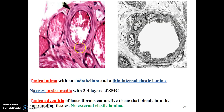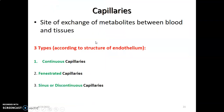This shows an arteriole with a tunica intima having an endothelium of simple squamous cells and a thin internal elastic lamina. There is a narrow tunica media with three to four layers of smooth muscle cells, and adventitia with connective tissue. In arterioles, there is really no external elastic lamina. As for capillaries — this is where exchange of metabolites occurs — I will discuss capillaries in a separate lecture, as it is slightly longer.